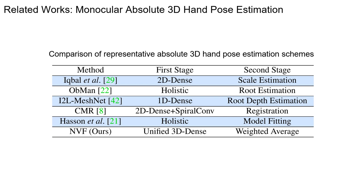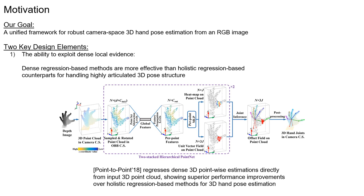Most existing works for camera space 3D hand pose estimation follow a two-stage estimation scheme. They first adopt holistic or pixel-level dense regression to obtain 2D and relative 3D hand poses, and then follow with complex second-stage processing such as fitting, registration, or using a separate network for 3D global root location or scale estimation. NVF instead provides a unified solution via direct dense modeling in 3D camera space followed by a simple weighted average operation, enabling reasoning about 3D dense local evidence and hand global geometry.